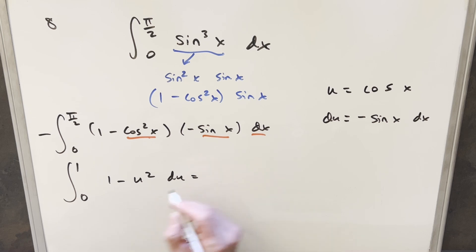I'll go ahead and integrate. The integral of 1 is u. The integral of u² is -u³/3. We evaluate from 0 to 1.